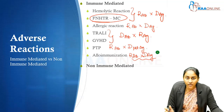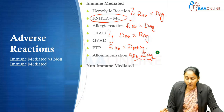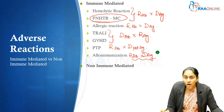To summarize the immune mediated adverse reactions: hemolytic transfusion reaction, febrile non-hemolytic transfusion reaction, allergic reactions, TRALI, GVHD, post-transfusion purpura, and alloimmunization. Now, what are the non-immune mediated adverse reactions?